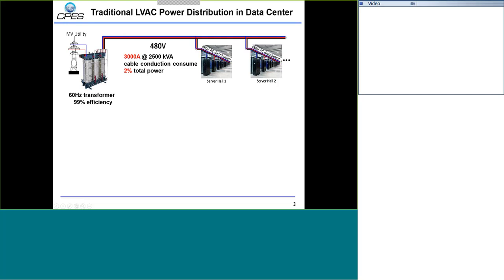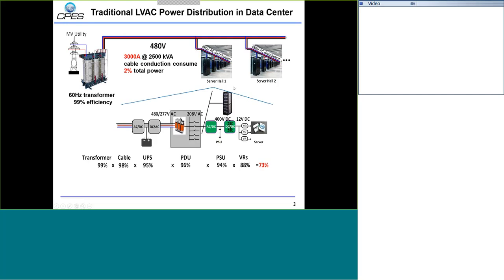In the future, this kind of conduction loss will become even higher. Also, within the server hall, because the input voltage is at least 480 volt AC, people normally use a UPS before delivering power to the server. You have an AC UPS and another transformer, and after this transformer the input becomes 200 volt AC. Then you go through the PFC AC-DC stage to get 400 volt DC, then step down further to reach the motherboard. There are so many power conversion stages that the total efficiency for this power conversion is just around 73%.